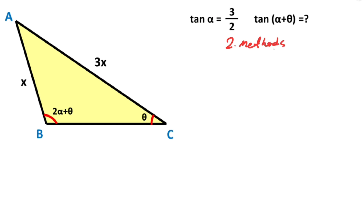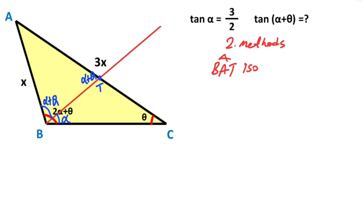Now we will calculate the value of tangent of alpha plus theta using a second method. This time I will create an isosceles triangle inside the triangle, so I am taking an angle of alpha degrees from here. Therefore alpha plus theta is left here. The sum of two opposite interior angles equals one exterior angle, so here it must also equal alpha plus theta. Notice that we get an isosceles triangle. Let's call this point T. Therefore triangle BAT is an isosceles triangle. If this side equals x, then this side must also equal x, so 2x is here.